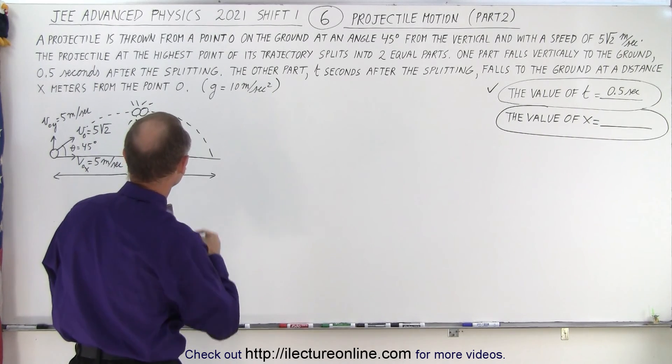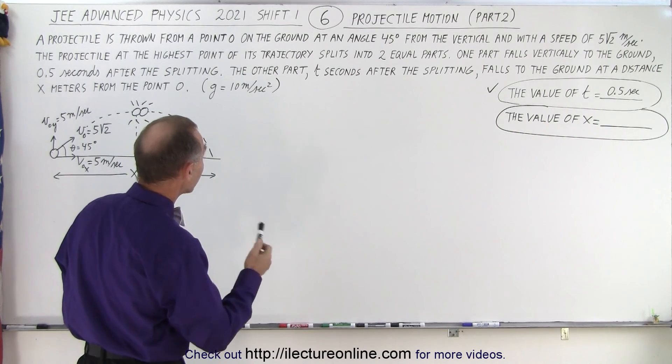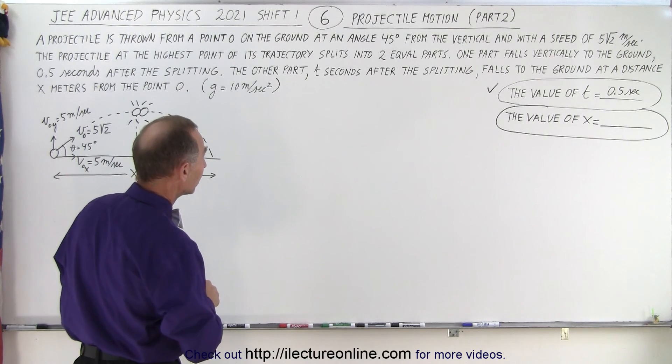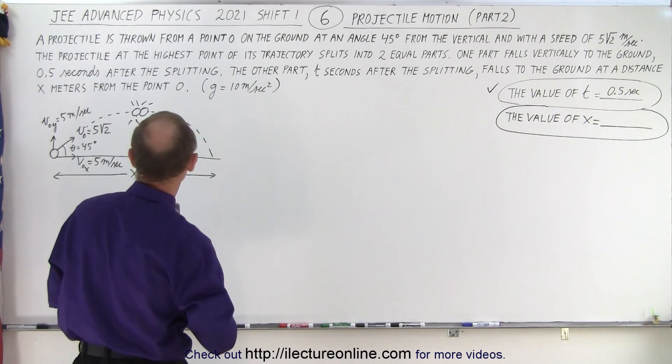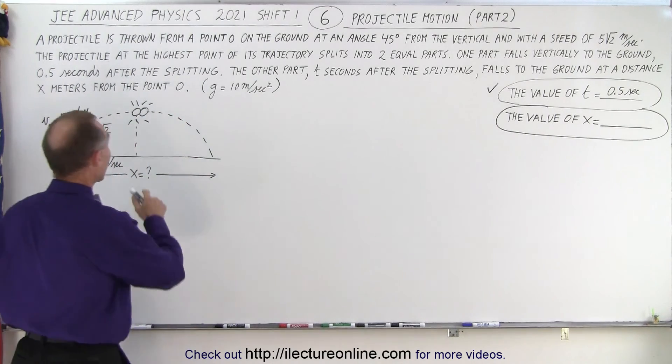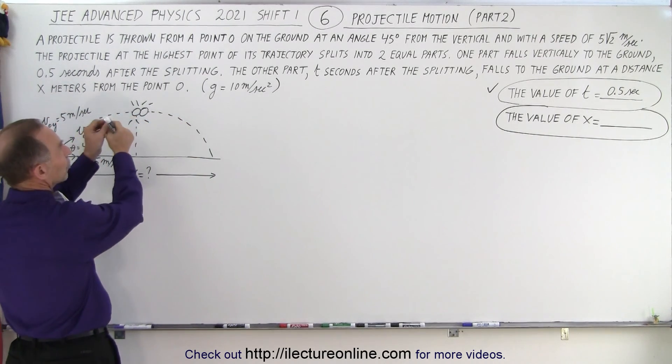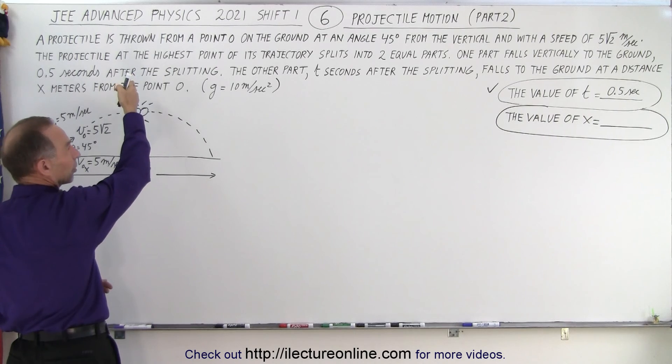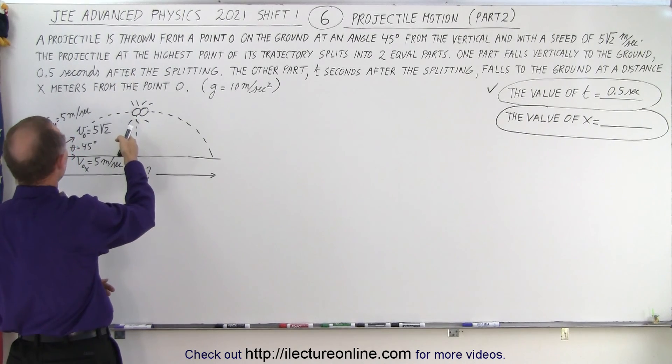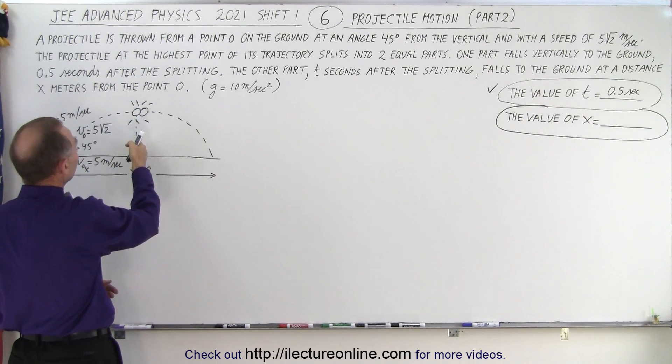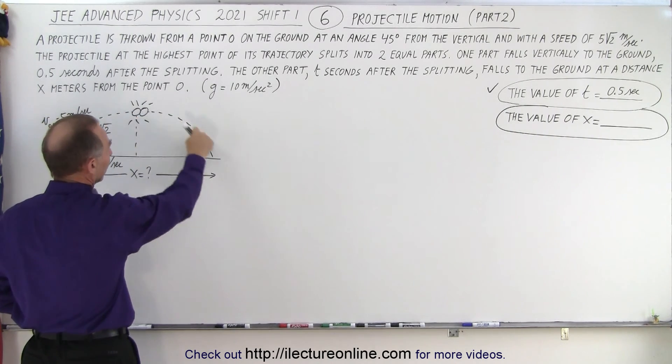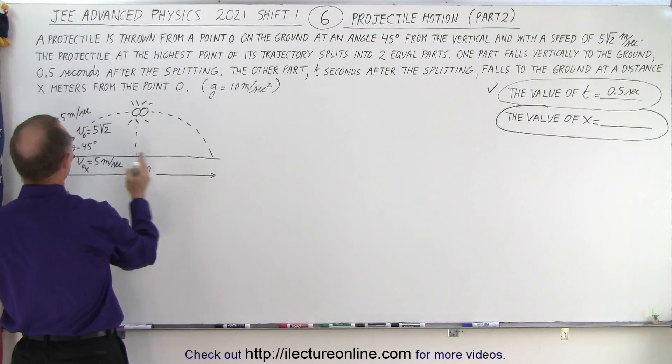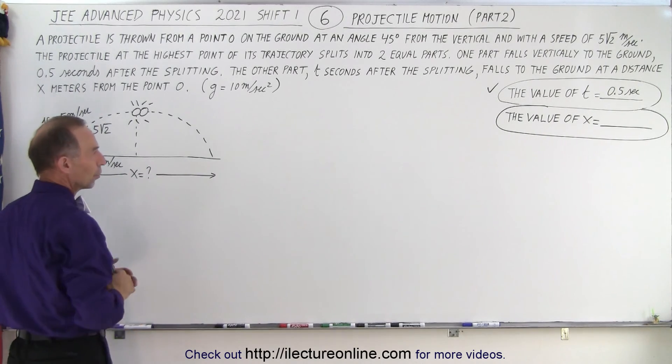A projectile is thrown from a point O on the ground at an angle of 45 degrees from the vertical and with a speed of 5 times the square root of 2 meters per second. The projectile at the highest point of its trajectory splits into two equal parts. One part falls vertically to the ground 0.5 seconds after the splitting. The other part, t seconds after the splitting, falls to the ground at a distance x from the original point O.